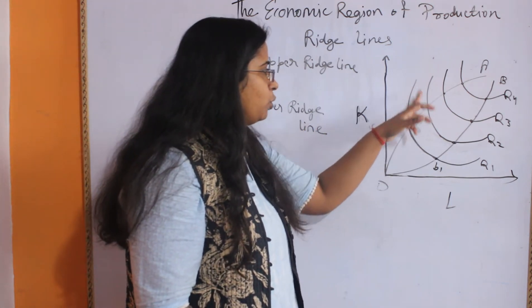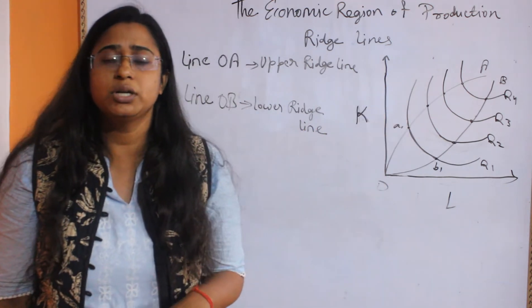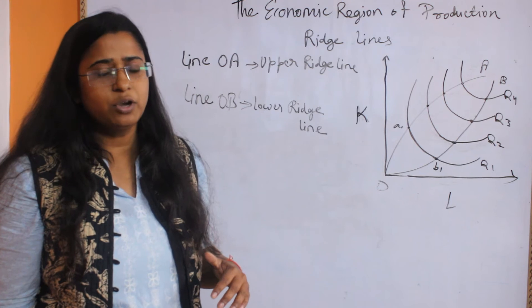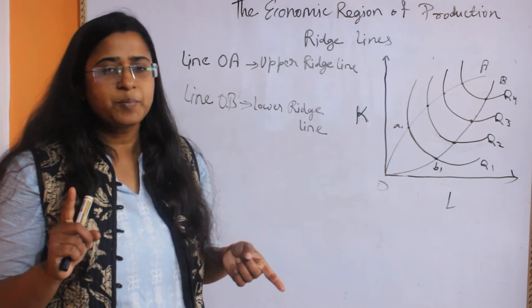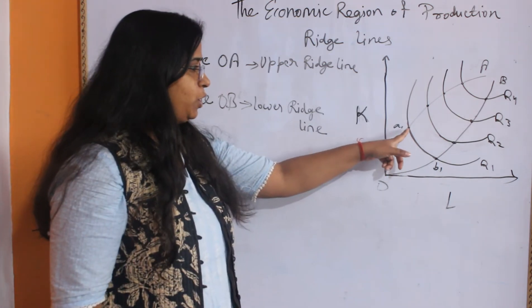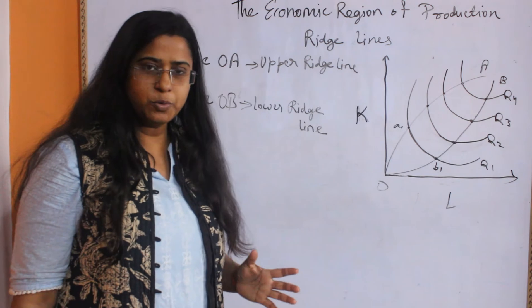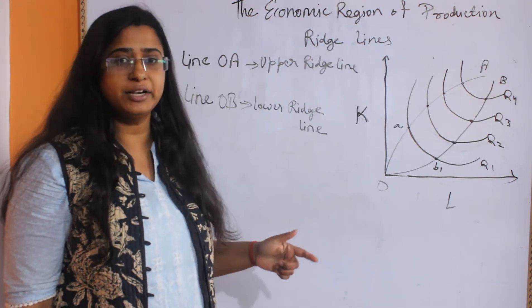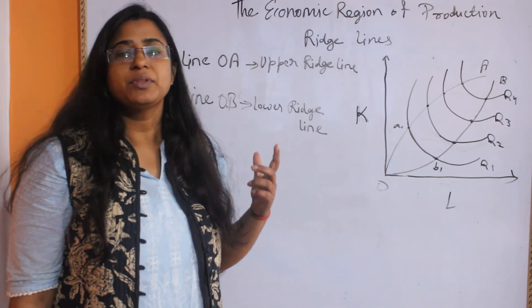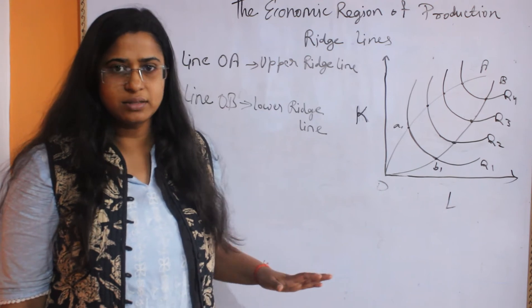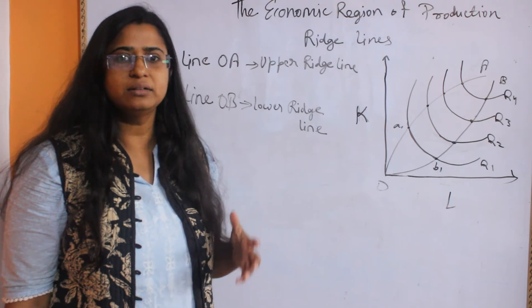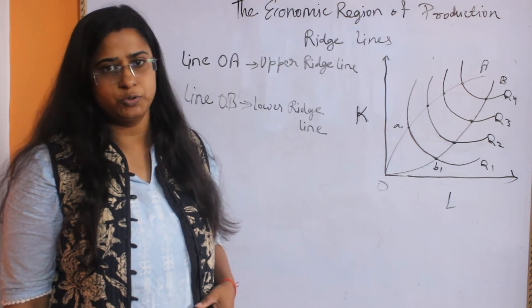But when you go above, the marginal product of a particular factor gets negative because one of the factors is not giving any positive output. Above this point, the marginal product of capital is becoming negative. That is, by employing more capital, the increment in output is nothing, or the increased amount of capital is adding nothing to the level of output.